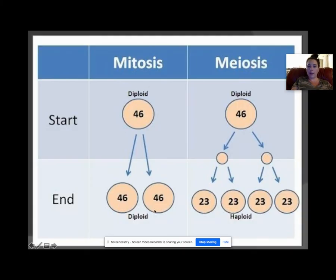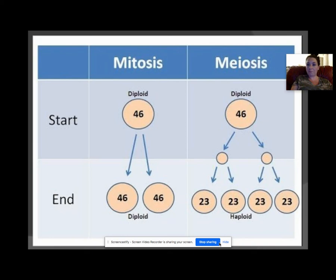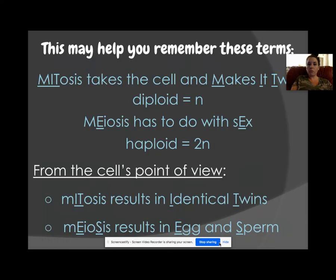In mitosis you start at 46 chromosomes and end at 46 — this is called diploid. In meiosis you end up with four cells each having 23 chromosomes — this is called haploid. Here's a memory aid: MIT-osis 'makes it two' — you go from one cell to two.